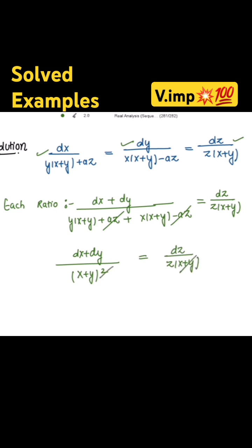So cancelling one x plus y from both sides, we get dx plus dy divided by x plus y equals dz divided by z, and then we take the integration on both sides.